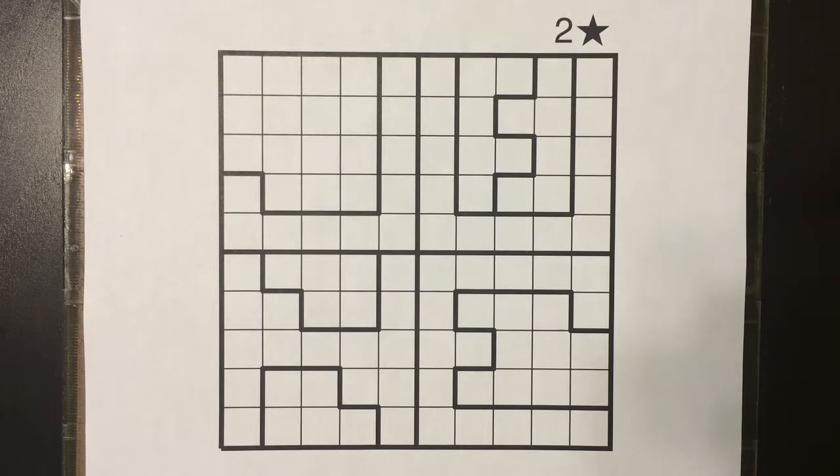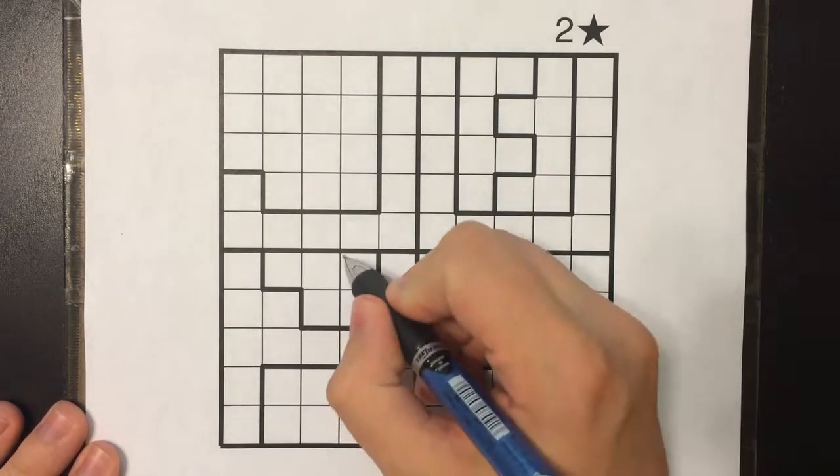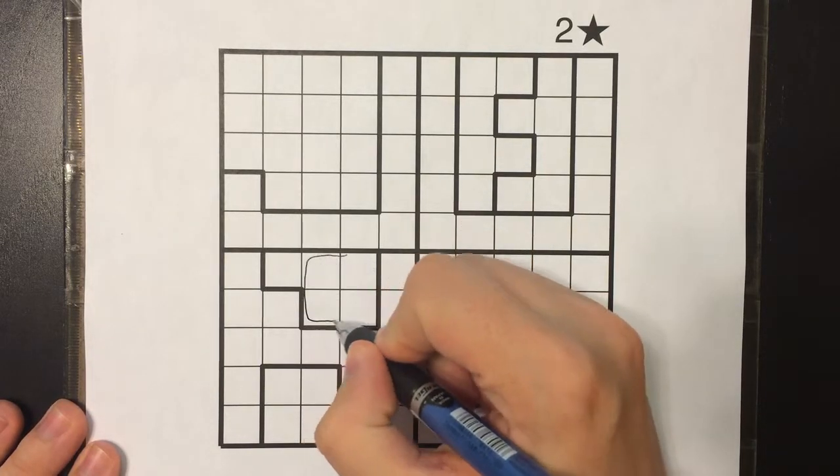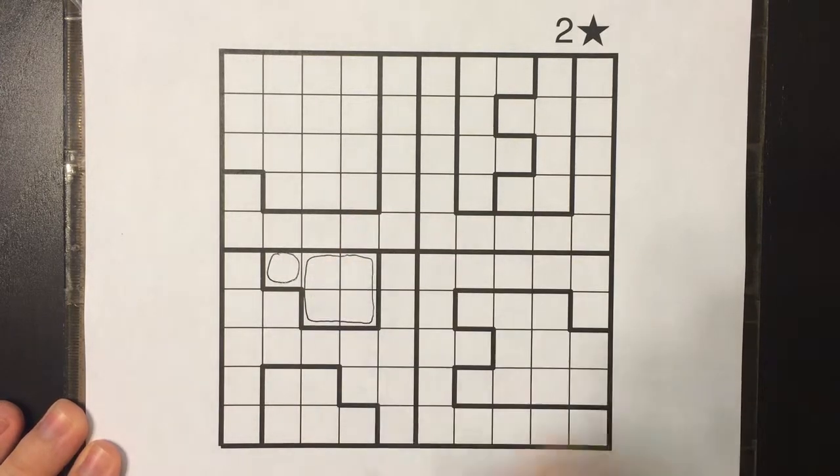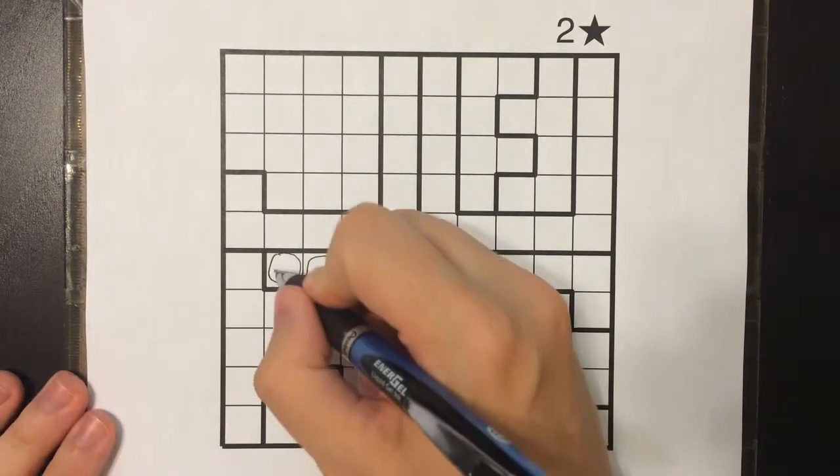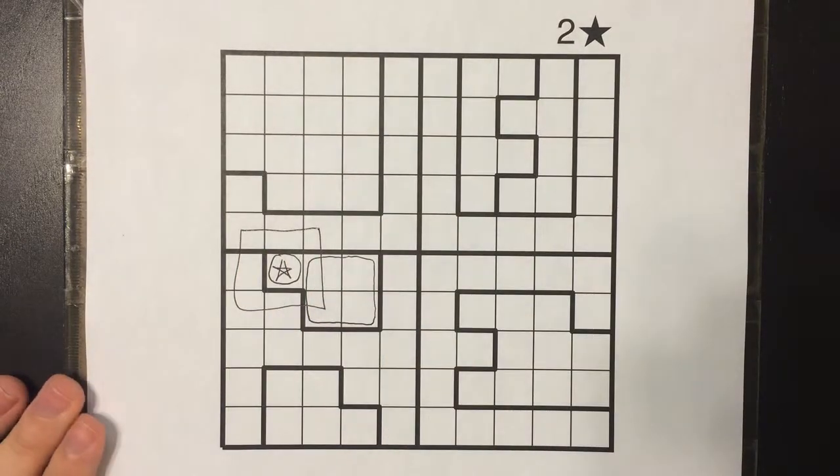The first thing to recognize is that in any 2x2 box there can only be one star, and in a region like this you can start the puzzle by effectively lassoing these cells and leaving behind the singleton, knowing that there must be a star in this cell and the rest of these are not used.